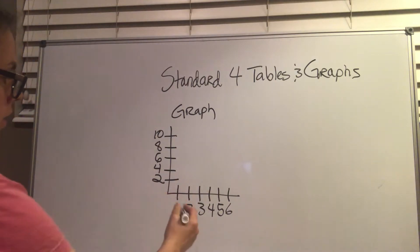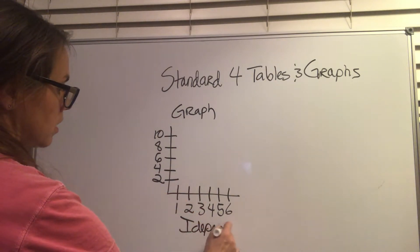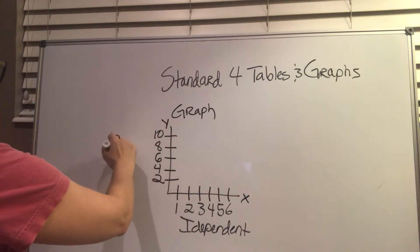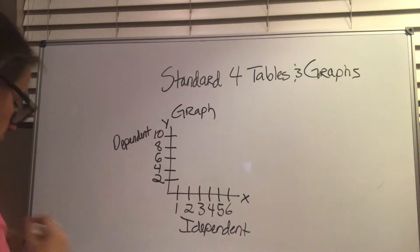We also need to remember that the independent variable goes on the x-axis. This is the x, this is the y. The dependent variable goes here. That's usually because we're measuring, and we want to see how it either increases or decreases as we alter this independent variable.